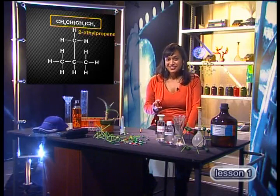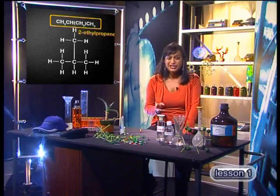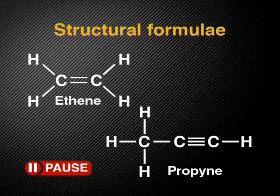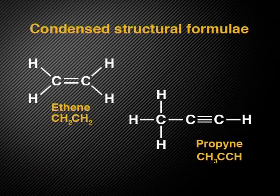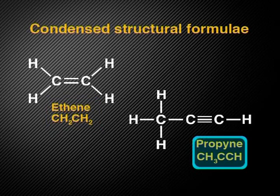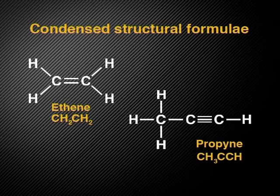See if you can write the condensed structural formula for these two molecules — ethene and propyne. The condensed structural formula for ethene is CH2CH2, and for propyne it is CH3CCH. Can you see that we will always know that there are double or triple bonds because of the smaller number of hydrogen atoms on each carbon?